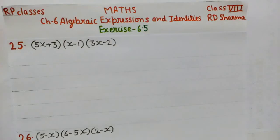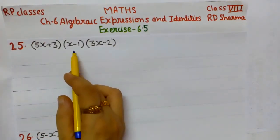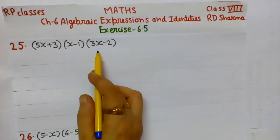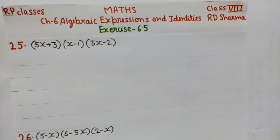Welcome back students in RP classes. Continuing Class 8 Maths R.D. Sharma Chapter 6 Algebraic Expressions and Identities, Exercise 6.5, Question 25: (5x + 3)(x - 1)(3x - 2).